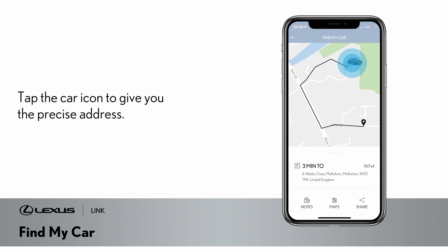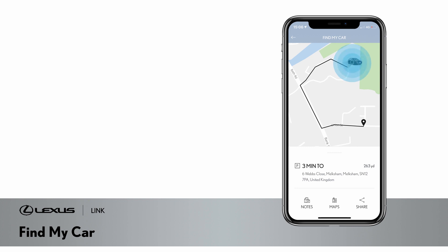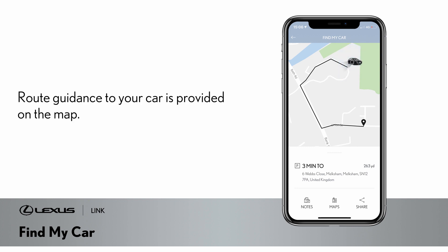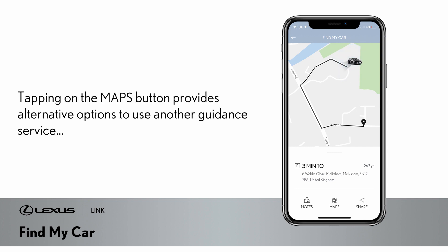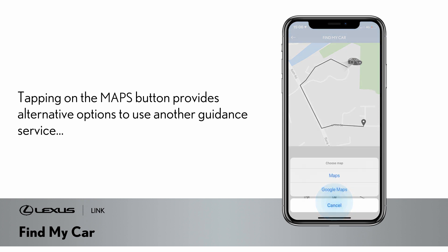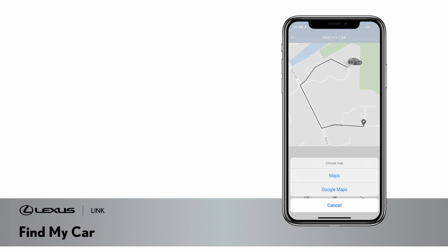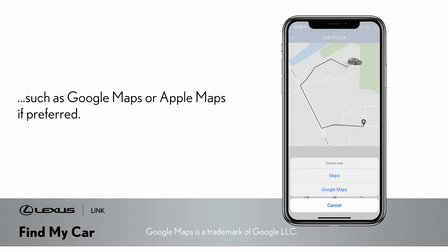Tapping on the car icon locates your car's precise address and provides route guidance on the map to show you the way. Tapping on the maps button provides alternative options to use another guidance service such as Google Maps or Apple Maps if preferred.